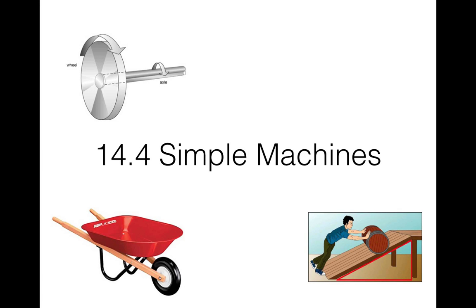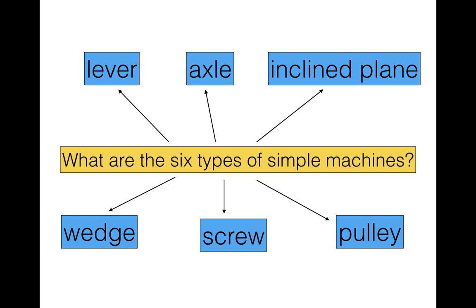Welcome to another video for General Science. In this video we're going to be finishing up chapter 14. We're going to be looking at simple machines. The first question that we're going to discuss is what are the six types of simple machines?